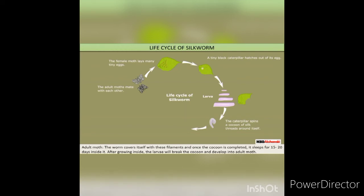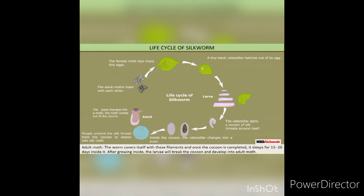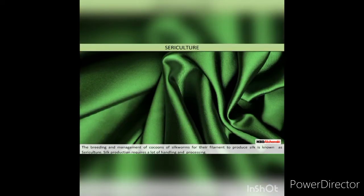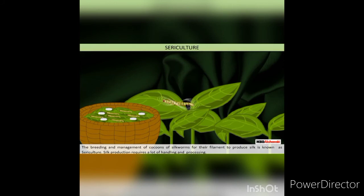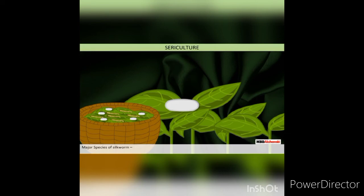The worm covers itself with these filaments, and once the cocoon is completed, it sleeps for 15-20 days. After growing inside, the larvae will break the cocoon and develop into an adult moth. The breeding and management of cocoons of silkworms for their filament to produce silk is known as sericulture. Silk production requires a lot of handling and processing, hence it is the most expensive of all the fibers.